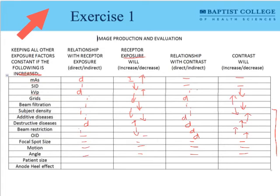Tying subject density back to patient size: as I increase patient size or body habitus, I would expect an indirect relationship with receptor exposure, and similarly I would expect an increase in patient size to decrease contrast due to scatter produced by the larger body habitus. Anode heel effect is purely a geometrical factor — it's just included here as something of a distractor.